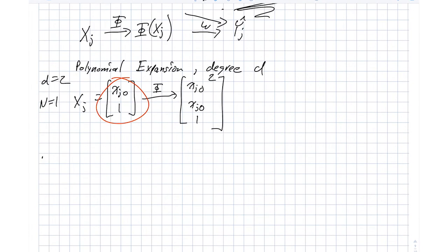But now let's imagine that we have n equal to 2. So xj is now 3 long: xj0, xj1, and a 1. What this phi does is it creates all possible quadratic terms first, and that includes the cross terms. So we have xj0 squared, xj1 squared, and then xj0 times xj1.